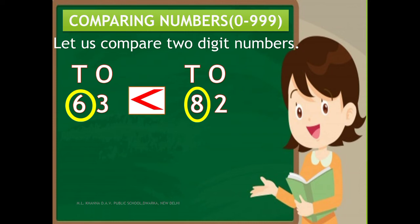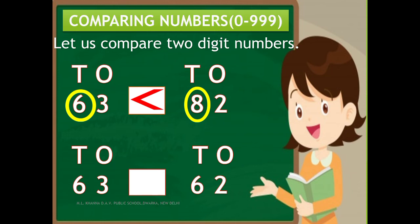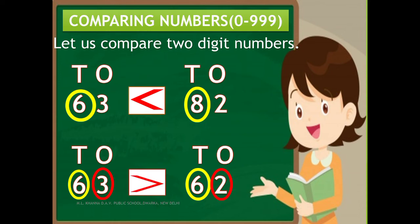6 tens are less than 8 tens, so 63 is less than 82. Now, if we change 82 to 62, let us compare 63 and 62. Both have 6 tens, so we move to the ones place. Comparing 3 ones and 2 ones, 3 ones are greater than 2 ones. That means 63 is greater than 62.